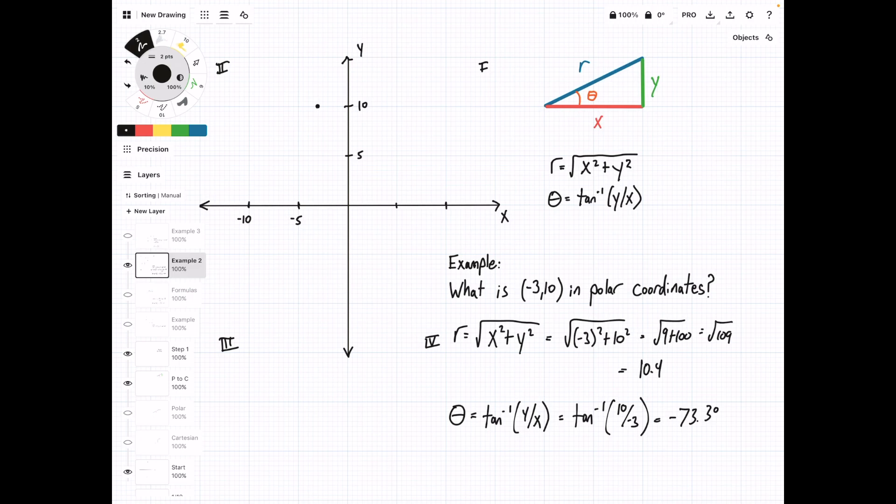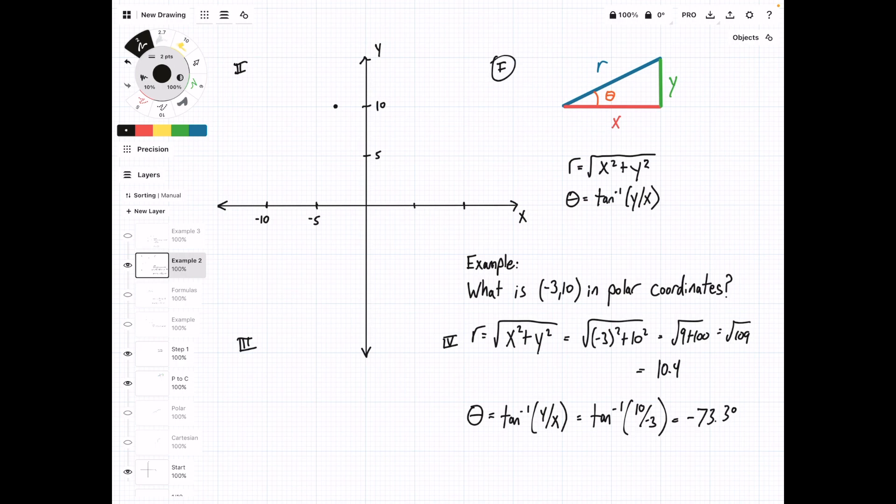So when you're in quadrant 2, which is where our point is, and I've labeled the quadrants like this 1, 2, 3, 4, when you're in quadrant 2, you need to add 180 degrees to this angle. When we do that, theta is equal to 106.7 degrees, which looks a little nicer.